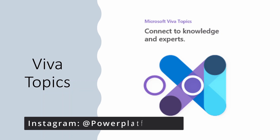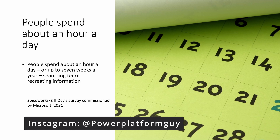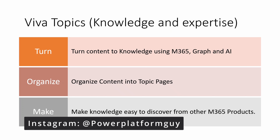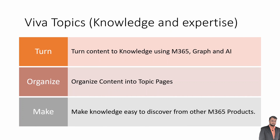For any organization, knowledge is a key factor and Viva Topics helps connect knowledge and experts. One survey says that people spend about an hour a day, or up to seven weeks in a year, searching or recreating information. This is a huge number, and Viva Topics comes up with a solution. Viva Topics turns content into knowledge using the Microsoft 365 graph and AI, and organizes the content into topic pages.